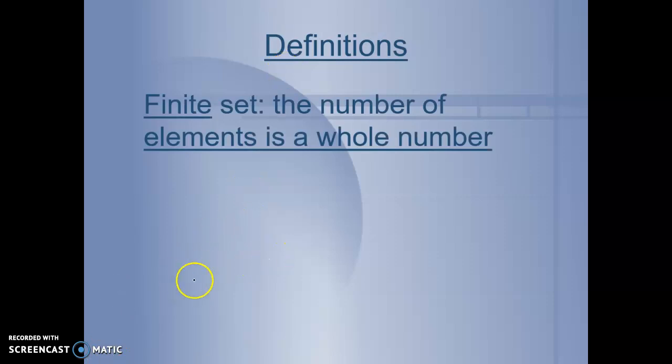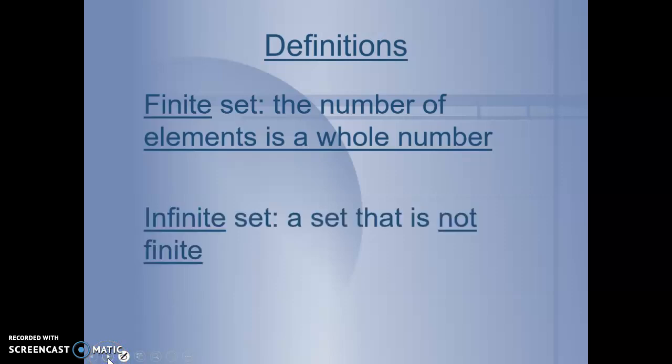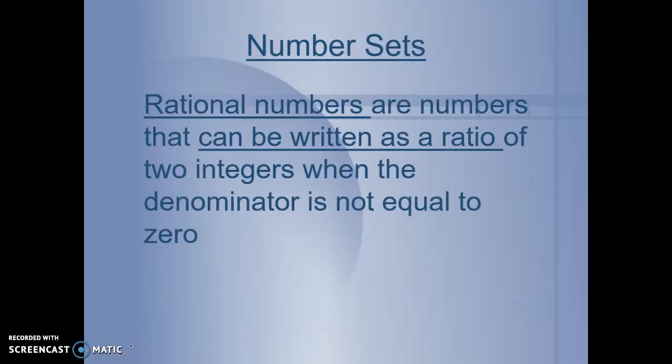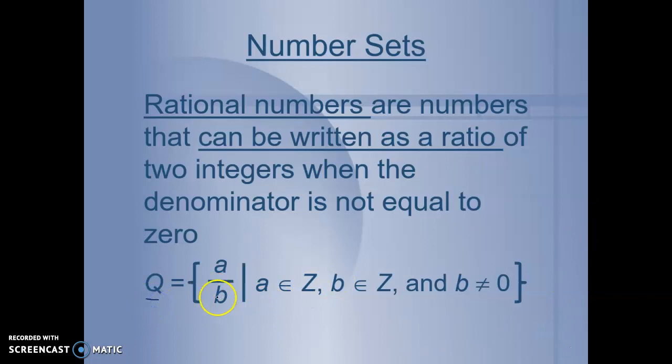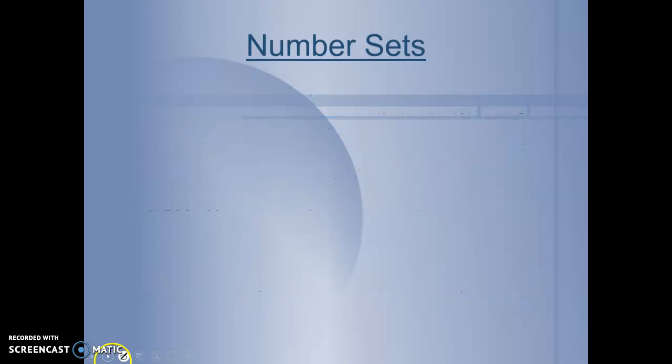A finite set occurs when the number of elements is a whole number. An infinite set is a set that is not finite, that has no ending. Rational numbers we just talked about, but here's the definition here as well. They're numbers that can be written as a ratio of two integers, when the denominator is not equal to 0. Here it's written out symbolically. Rational numbers are numbers that can be written as a ratio of two integers, A and B. And A is a subset of an integer, or an element of the integer, B is an element of the integers, and B is not equal to 0. B cannot be equal to 0. You cannot have a 0 on the bottom of a ratio for it to be a rational number.